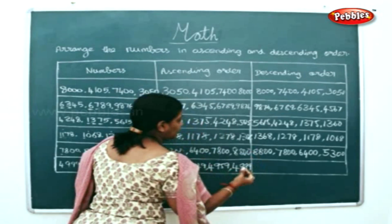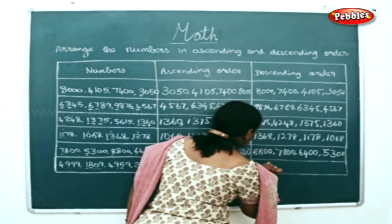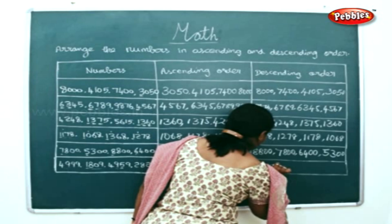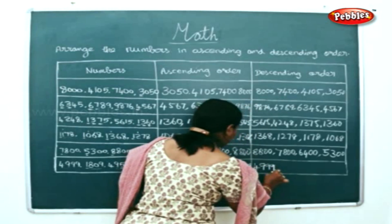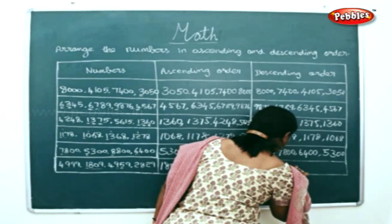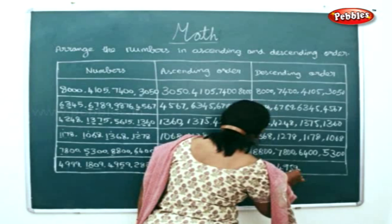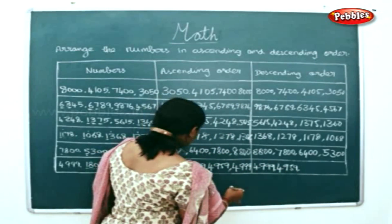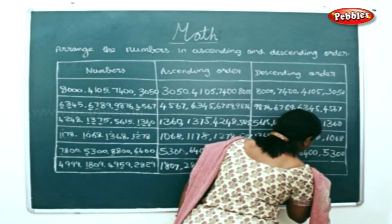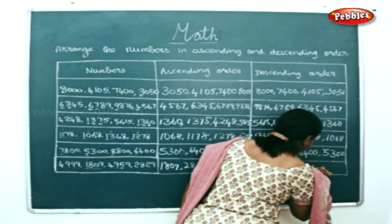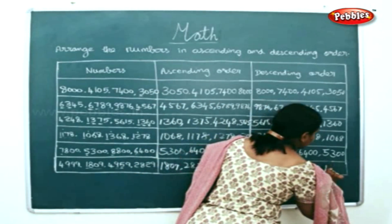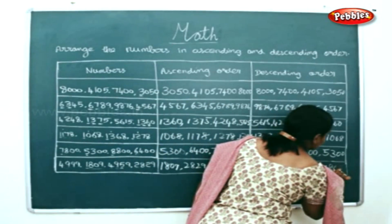Now, we will write this in the reverse order. 1809 is the least.